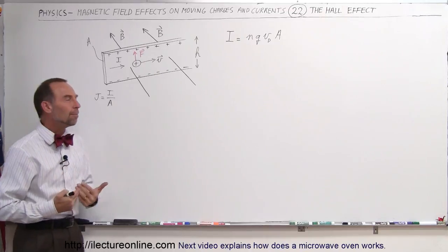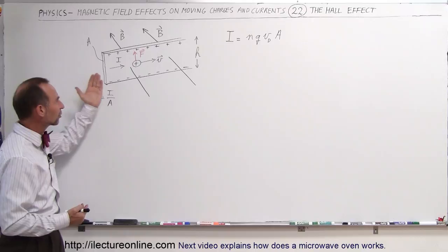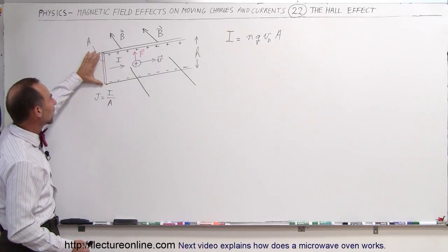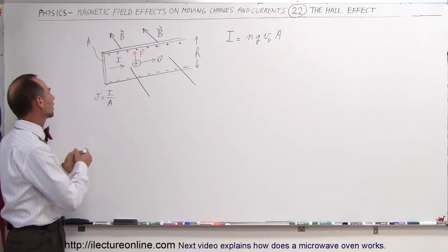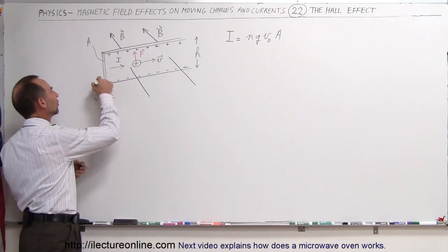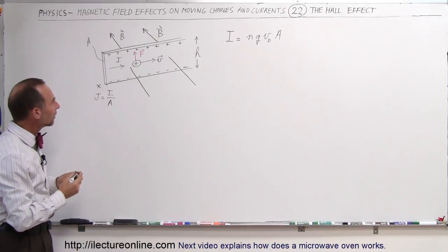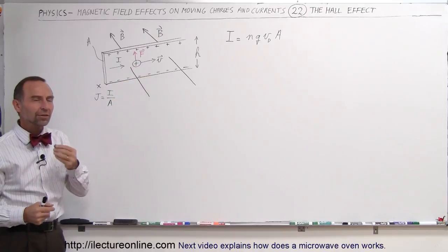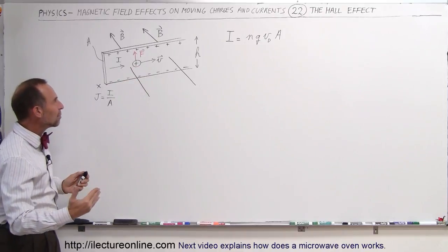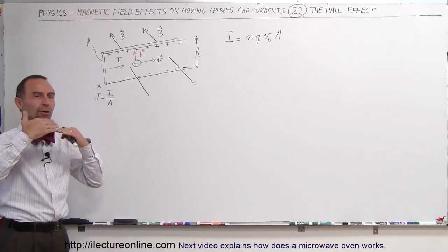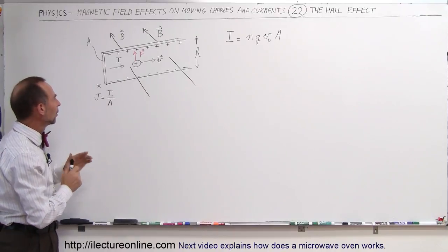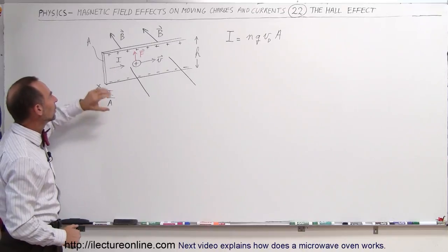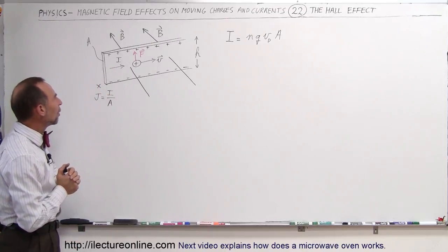Let's set up a theoretical model. We have a conductor made out of some conducting material with a certain thickness x and height h. There's current moving from left to right, and we'll assume the charges are positive. We also have a magnetic field perpendicular to the conductor, with a current of magnitude i flowing through.